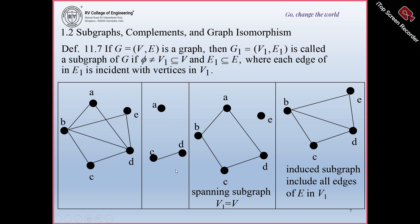How many subgraphs are possible? You can have any number of vertices, so 2 power V will be the number of subsets for the vertex set, and for each vertex set, you can have 2 power E number of edge subsets, excluding the empty vertex set and empty edge set. A spanning subgraph is nothing but a graph in which you consider all the vertices of the given graph — a subgraph in which all vertices are present.